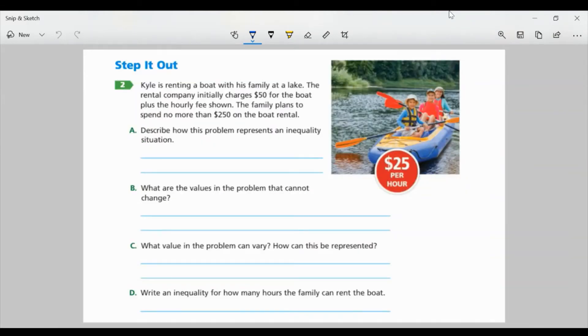So let's look at task 2. Kyle is renting a boat with his family at a lake. The rental company initially charges $50 for the boat, plus the hourly fee shown. The family plans to spend no more than $250 on the boat rental. And the fee per hour, or hourly fee, is $25. Part A. Describe how this problem represents an inequality situation. Well, we know the amount that the family is going to pay for the initial charges and the hourly fee can be no more than $250. So I know the amount is no more than $250.